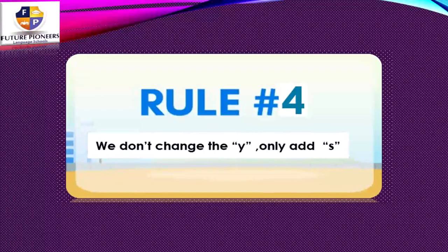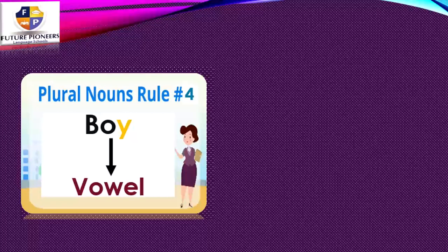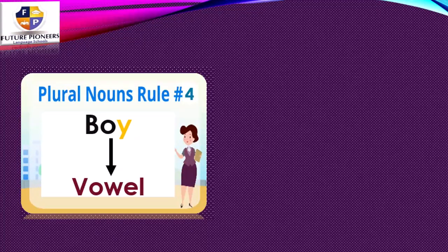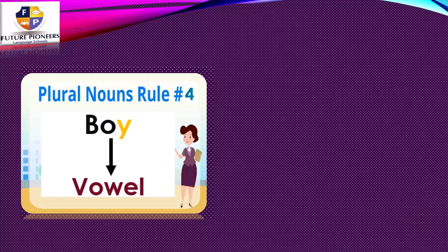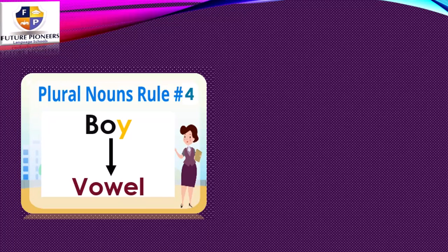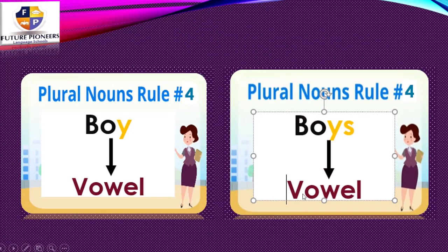Let's go to the last rule we have. Rule number four: we do not change the Y and just add S. When? If the letter before the Y is a vowel. Do you know the vowels? Let's count them together — five friends: A, E, I, O, U. If you see a vowel before the Y, vowels love the Y. So I have to keep it as it is and just add S.